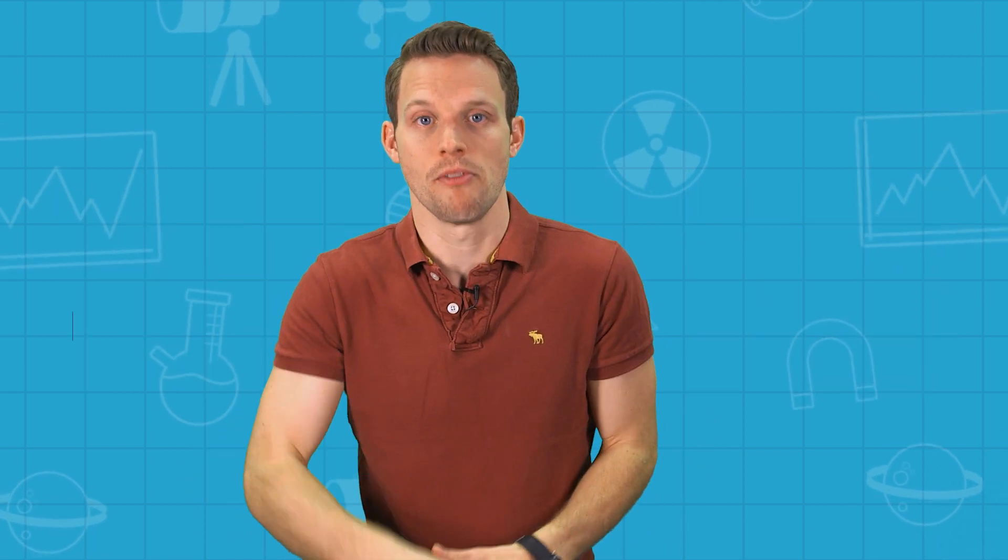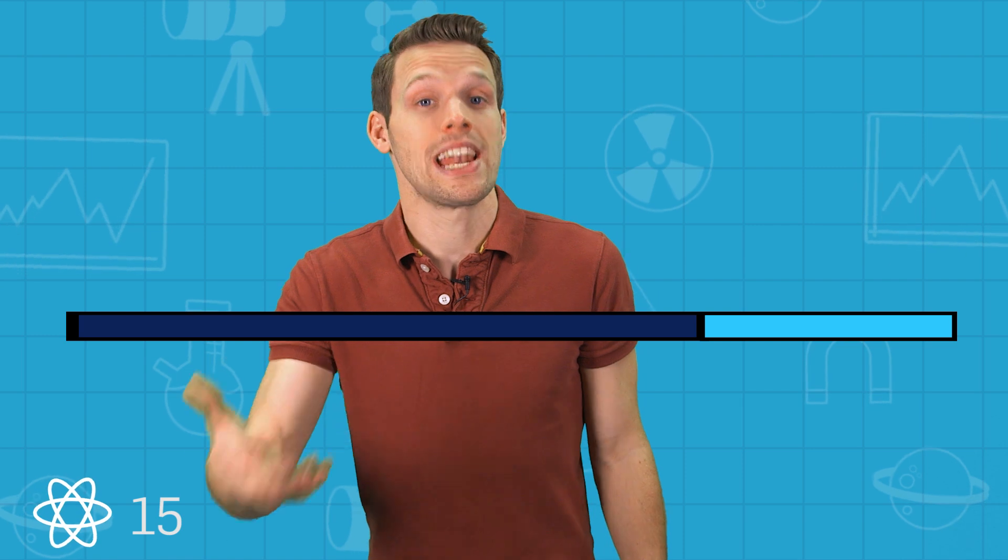Still, there is some evidence that an occasional short fast can be good for you. Something like 5 days spread out over a month can reduce your risk of heart disease. People have also found good results with the intermittent fasting program. 5 days eating, 2 days fasting. Now we also know that some animals live longer when calories are cut by 40%, but no one's proved this on humans just yet.